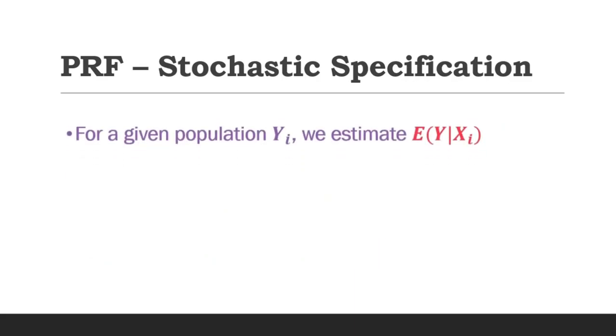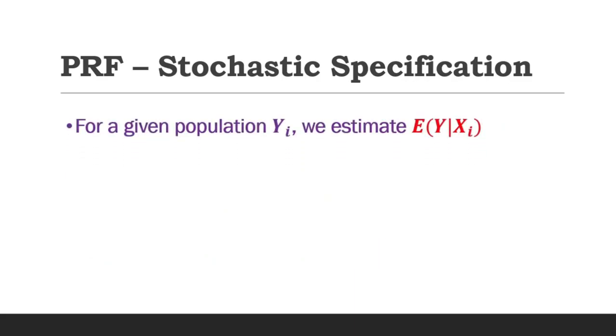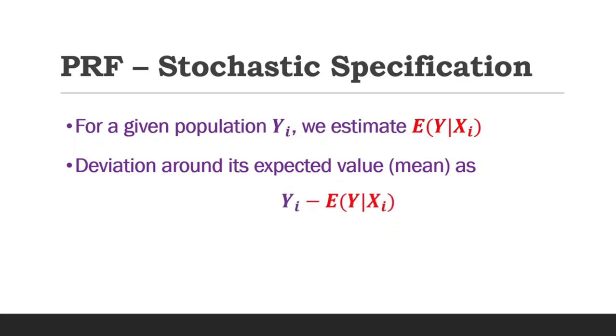Now, for a given population y, we estimate the expected value of y given the values of x. This expectation can also be called the mean of y. So deviation around the mean or expected value can be expressed as the difference between the population y and its estimated value. This difference is known as deviation, or as econometrics calls it, the error term u.